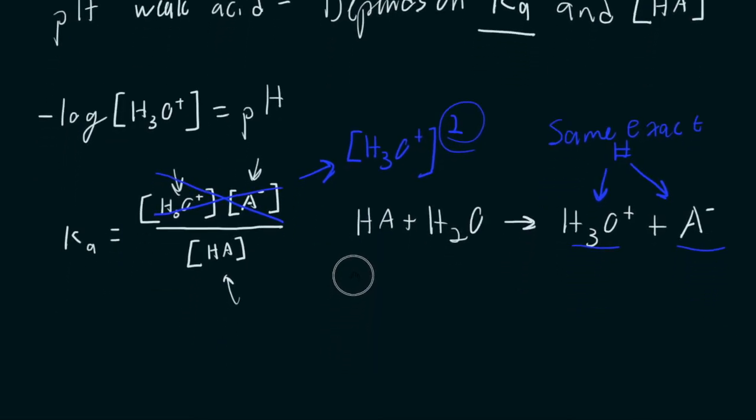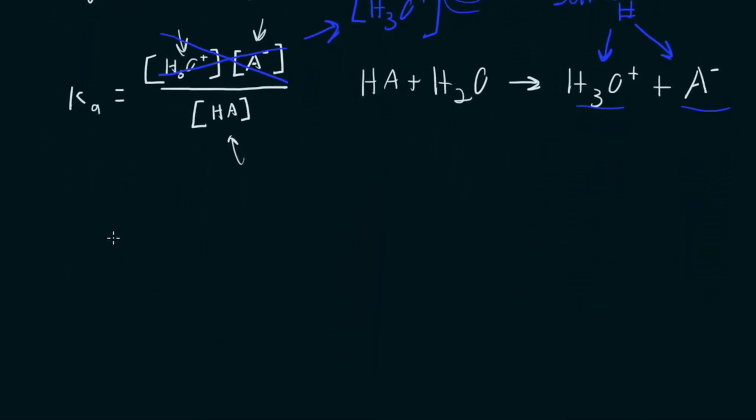So now, let's put this back together. Let's make this start to make sense. We've got Ka is now going to equal the H3O+ squared, divided by HA, or the concentration of HA.